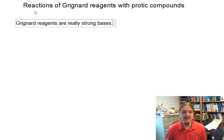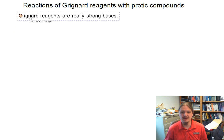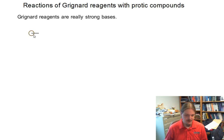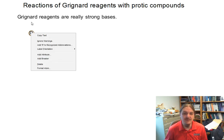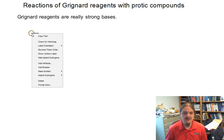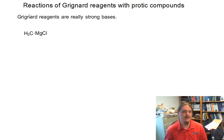And this can complicate their use in reactions, and we'll talk about those complications here in a moment. I'm going to write out a specific Grignard reagent — I want to use the simplest of all possible Grignard reagents, like methyl magnesium chloride.